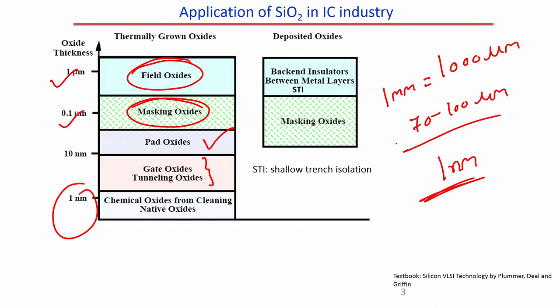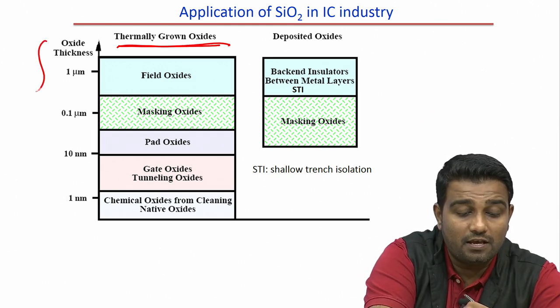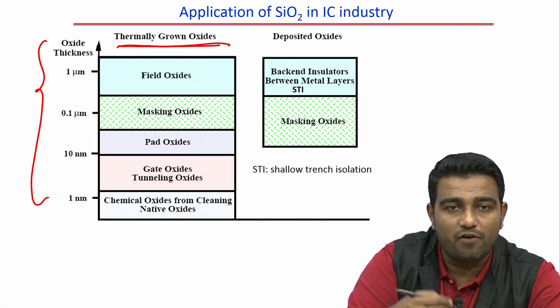At around 1 nanometer we can have chemical oxides from cleaning native oxides. This is thermally grown oxide — we can vary the thickness from 1 nanometer to 1 micron. Another option is deposited oxide, as opposed to thermally grown oxide.